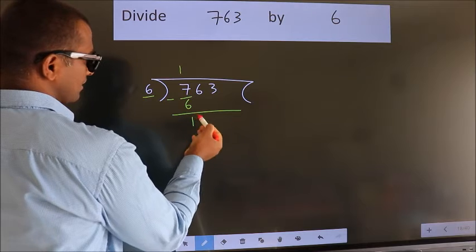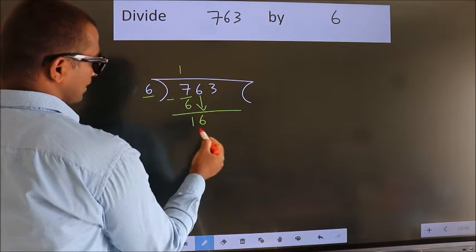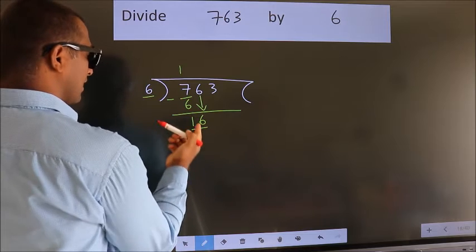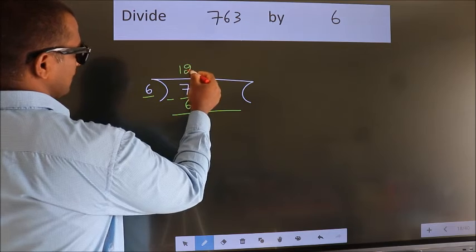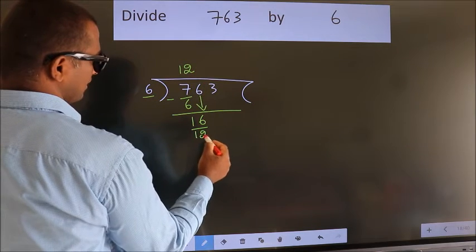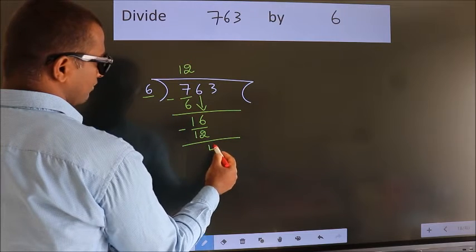After this, bring down the beside number. So 6 down. So 16. A number close to 16 in the 6 table is 6 times 2 is 12. Now we subtract. We get 4.